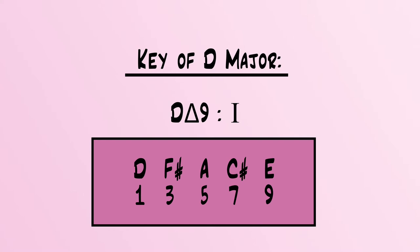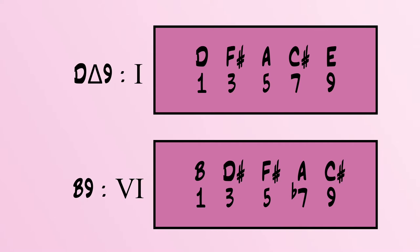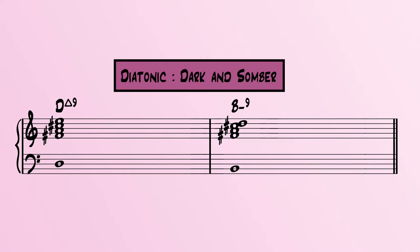Aside from the D sharp occurring within the B chord, the extensions are also diatonic. Normally we would have a B minor 9, but instead we have a B9. Because of the chromatic mediant, we go from having a diatonic progression to now having a chromatic progression.